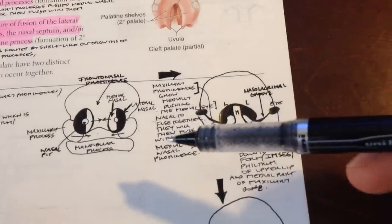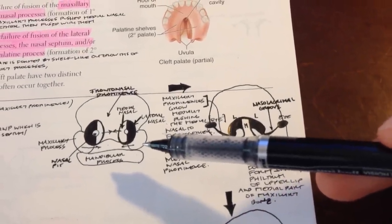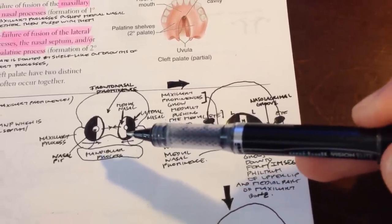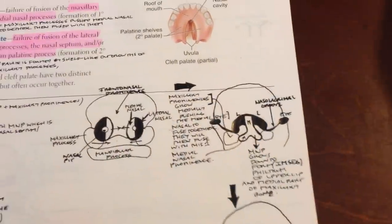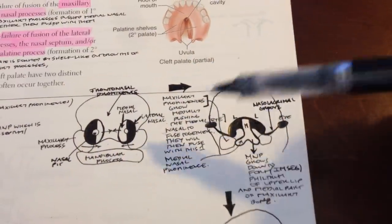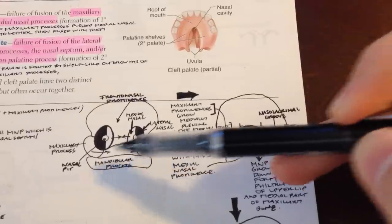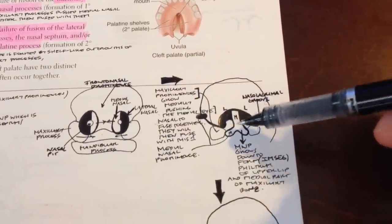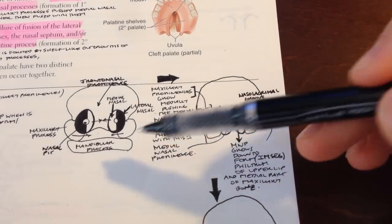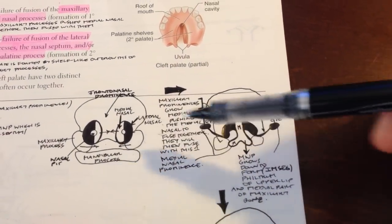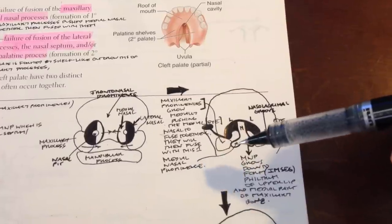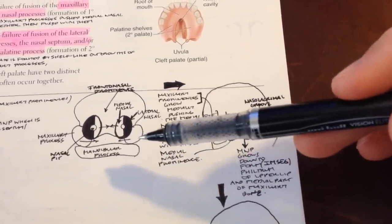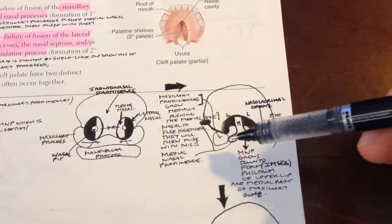In the next two weeks, the maxillary processes increase in size and grow in a medial direction, causing compression of the medial nasal prominences toward the midline — as represented by the arrows here. The medial nasal prominences will eventually fuse with each other, and the maxillary processes will also fuse with the medial nasal prominences, as you can see here.